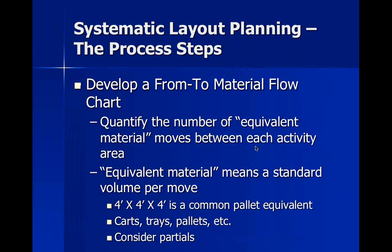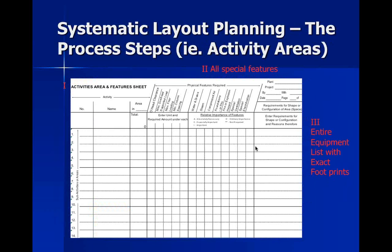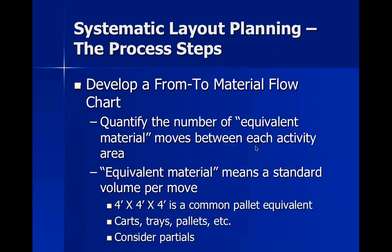Once you've developed the activity areas, the next step is to generate real data of material movement — the flow driver of your process. We're going to develop a chart called the from-to, or from-to-to-from material flow chart. We list the various operations vertically and across the top, and we quantify the equivalent material moves between each activity area. One to one, you can't — but one to two, two to one, and so forth. This data will drive whether certain operations need to be close to each other.